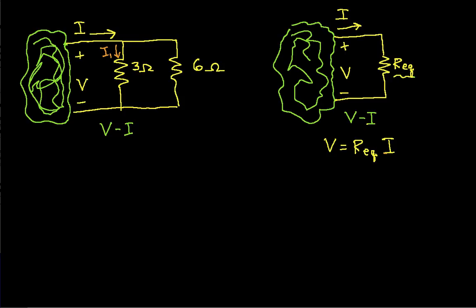So we'll define, we'll call this I1, the current through the 3 ohm resistor, and I2, the current through the 6 ohm resistor. We know that the voltage across both resistors is the same because they are both connected between the same two nodes. That's also how we know that they're parallel resistors. Resistors are parallel if they're connected between the same two nodes.